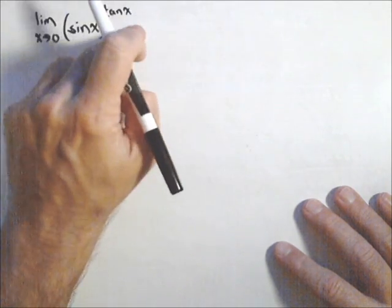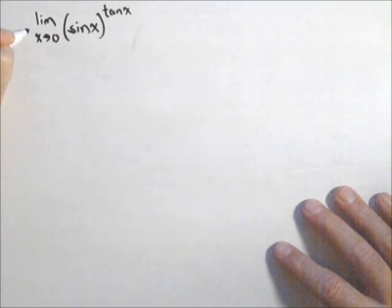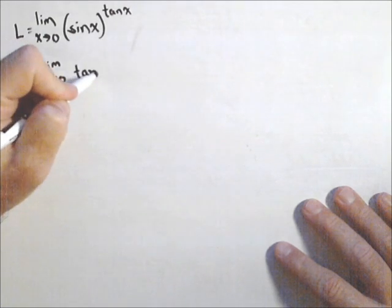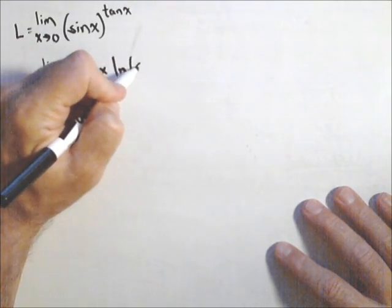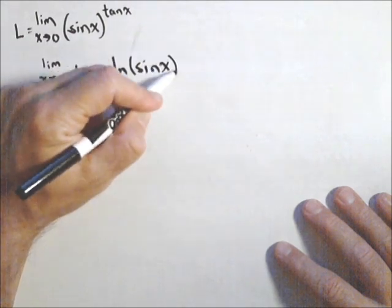What we're gonna do is call this L, because what I'm gonna do is actually take the natural log of what I got going on in here. So I got the limit as x goes to zero of tangent x ln of sine x.